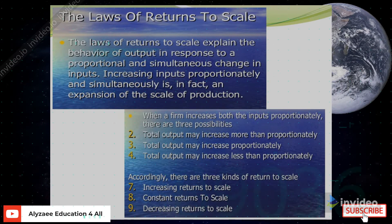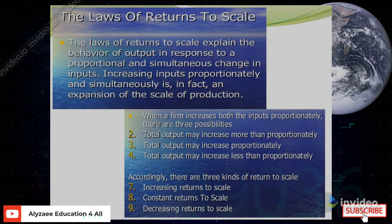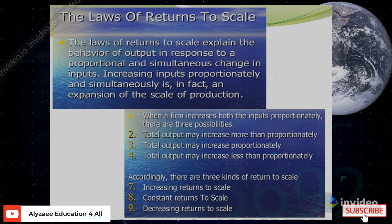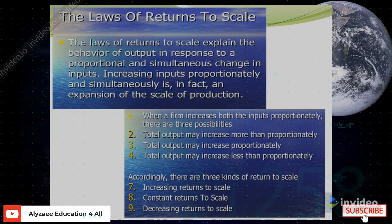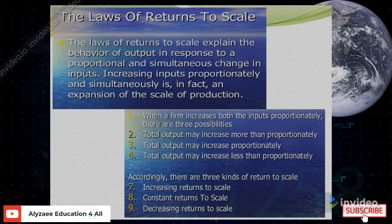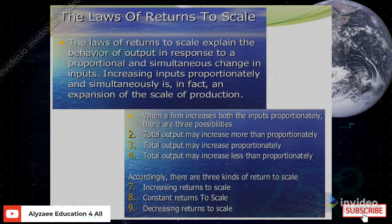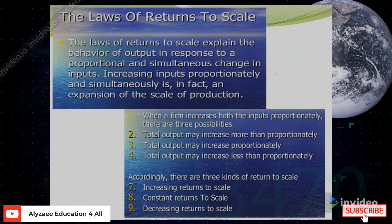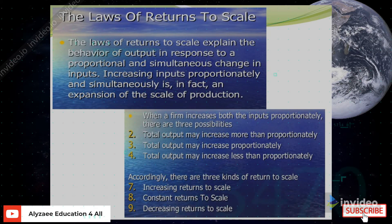The laws of return to scale explain the behavior of output in response to a proportional and simultaneous change in inputs. Increasing inputs proportionately and simultaneously is in fact an expansion of the scale of production. When a firm increases both inputs proportionately, there are three possibilities.